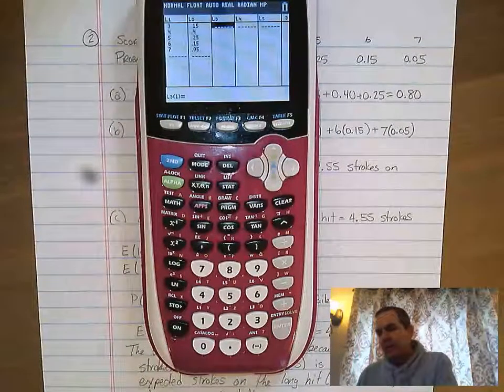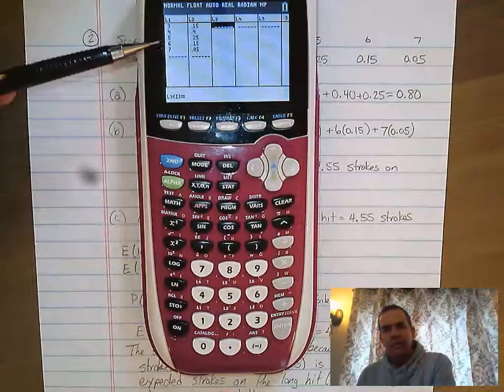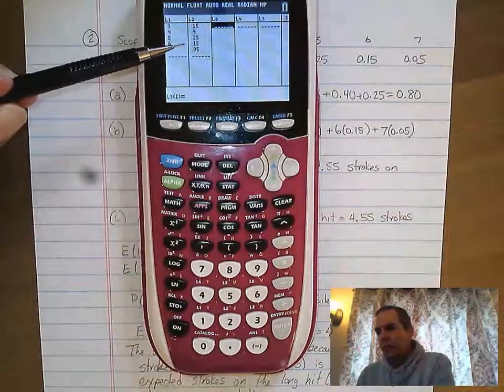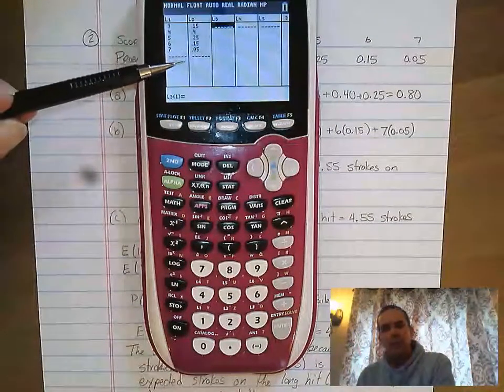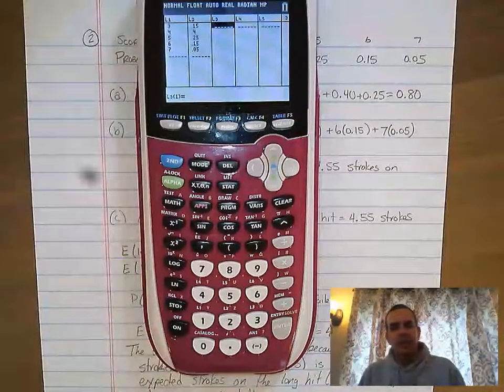So in this case, the outcomes are 3, 4, 5, 6, and 7. And their corresponding probabilities, 0.15, 0.4, 0.25, 0.15, 0.05. Now here comes the deal where you can use your calculator to help you out.